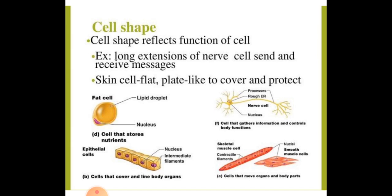For example, you all have seen RBCs — red blood cells. They are round and biconcave in shape because they have to pass through the capillaries. That's why their shape is biconcave. Nerve cells are long and thread-like because they have to send and receive messages.